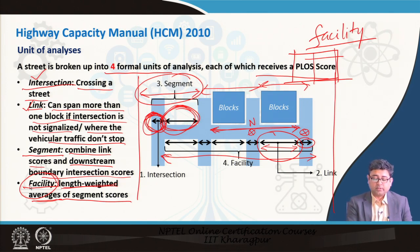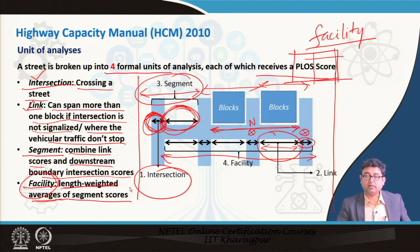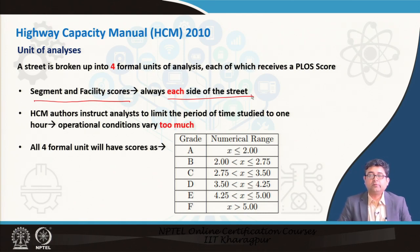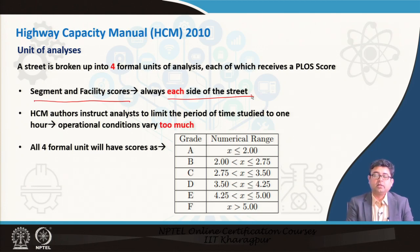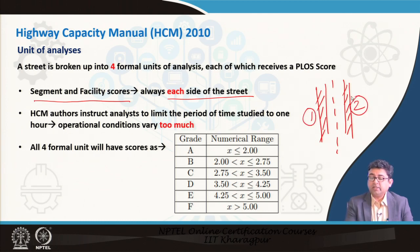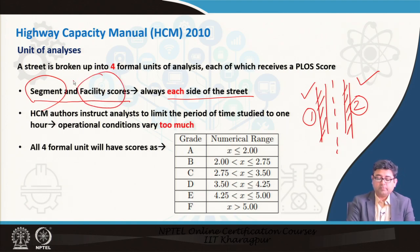Now let us start one by one with all four units of analysis, starting with the smallest — the intersection. Before we do that, note that segment and facility scores are always calculated on each side of the street. If there are pedestrian facilities on both sides, the segment and facility scores are different for each side. So each footpath will have a PLOS score developed separately when looking at segment and facility PLOS scores.